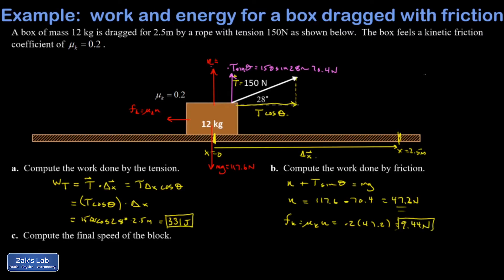Another important result. Now I want the work done by friction. Friction points opposite to the direction of motion — opposite to the displacement vector — so cosine of 180 is negative 1, putting a minus sign on the answer. The work done by kinetic friction is negative: minus the magnitude of the friction force times the magnitude of the displacement. This tells us how much energy friction deleted from the system, and it's negative 23.6 joules.